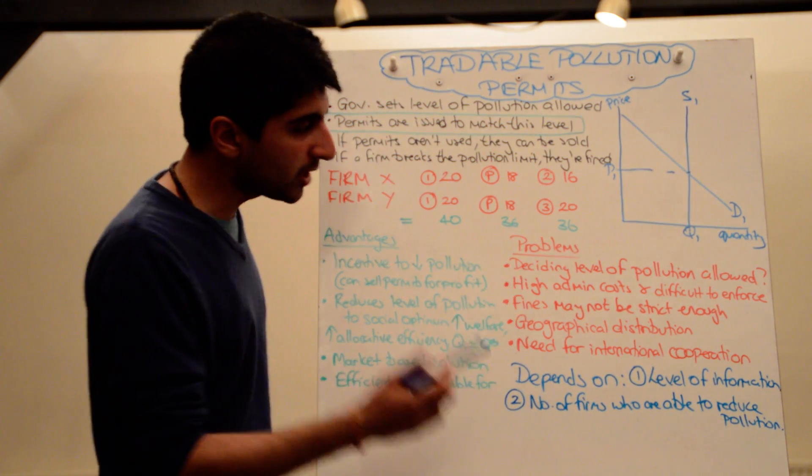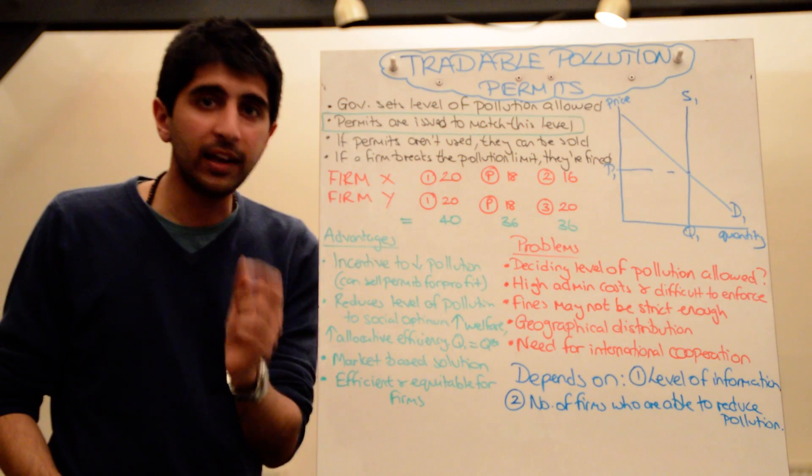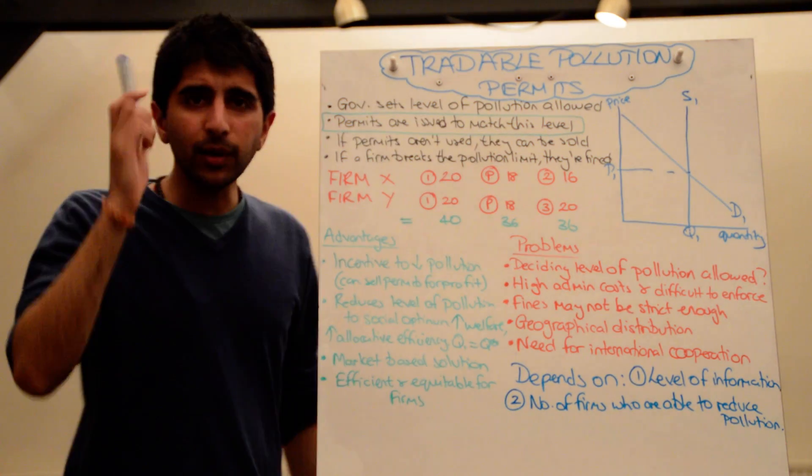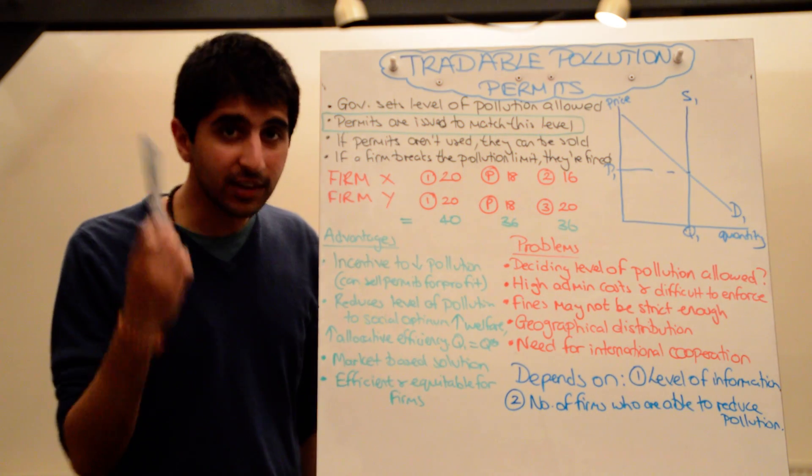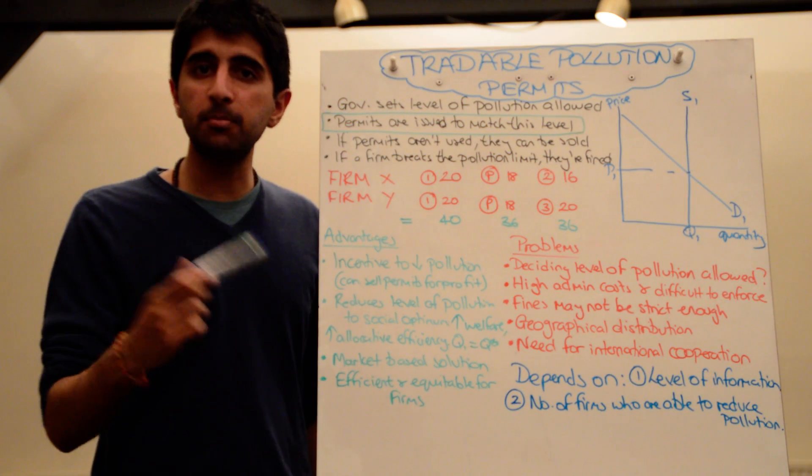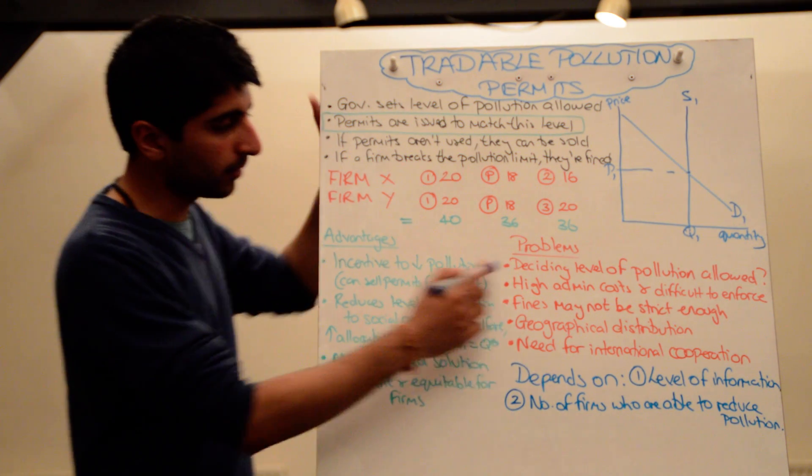But there are some major problems too. Deciding on the level of pollution. Initially, the government decided, but how can it decide? How does it know what the social optimum level of pollution is? Very difficult. If it gets it wrong, it might actually make things worse. So that's a big problem.